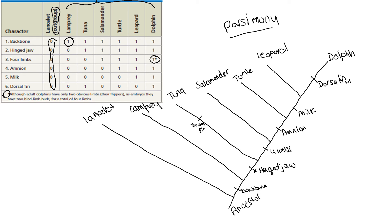From the text you should have read about the principle of parsimony, which states that the simplest explanation is the best explanation. When talking about trees — which are hypotheses — the most parsimonious tree requires the least number of changes for it to be true. Counting the events in this first tree: one, two, three, four, five, six, seven changes. So seven events must have happened for this hypothesis to be true.